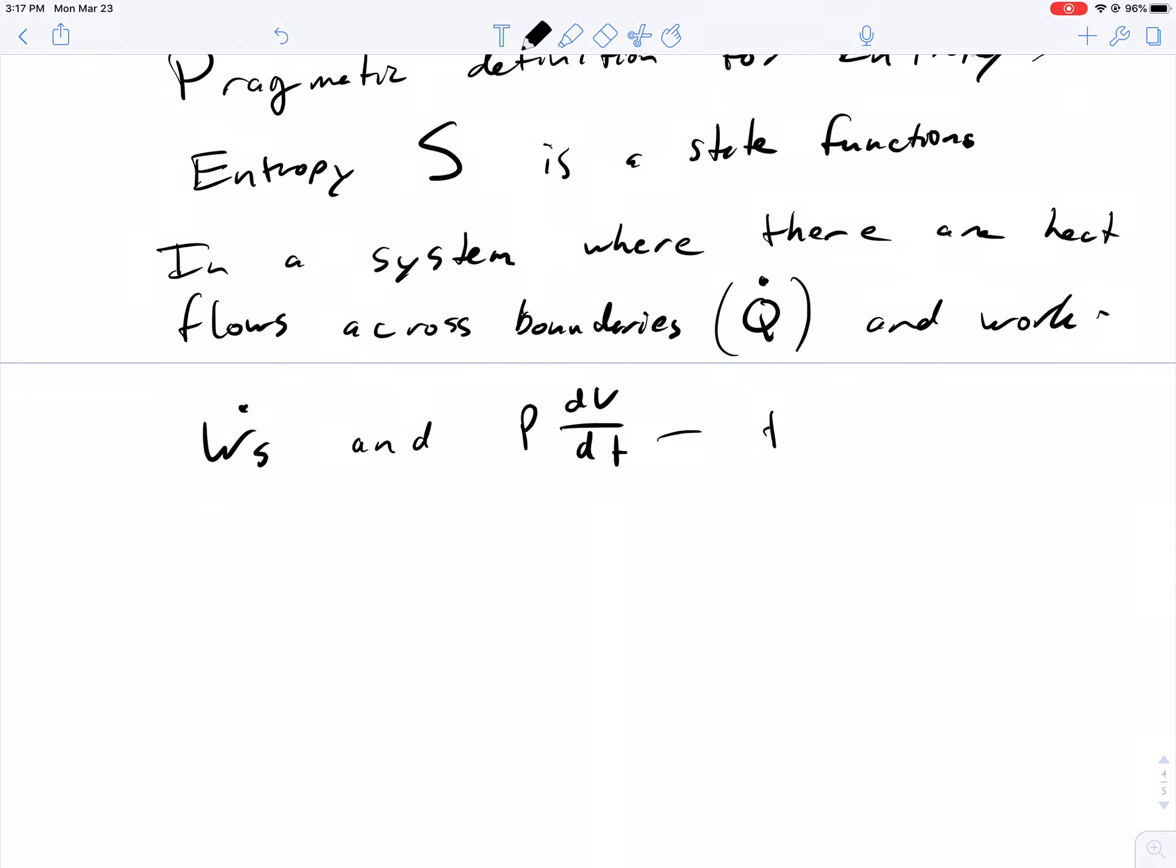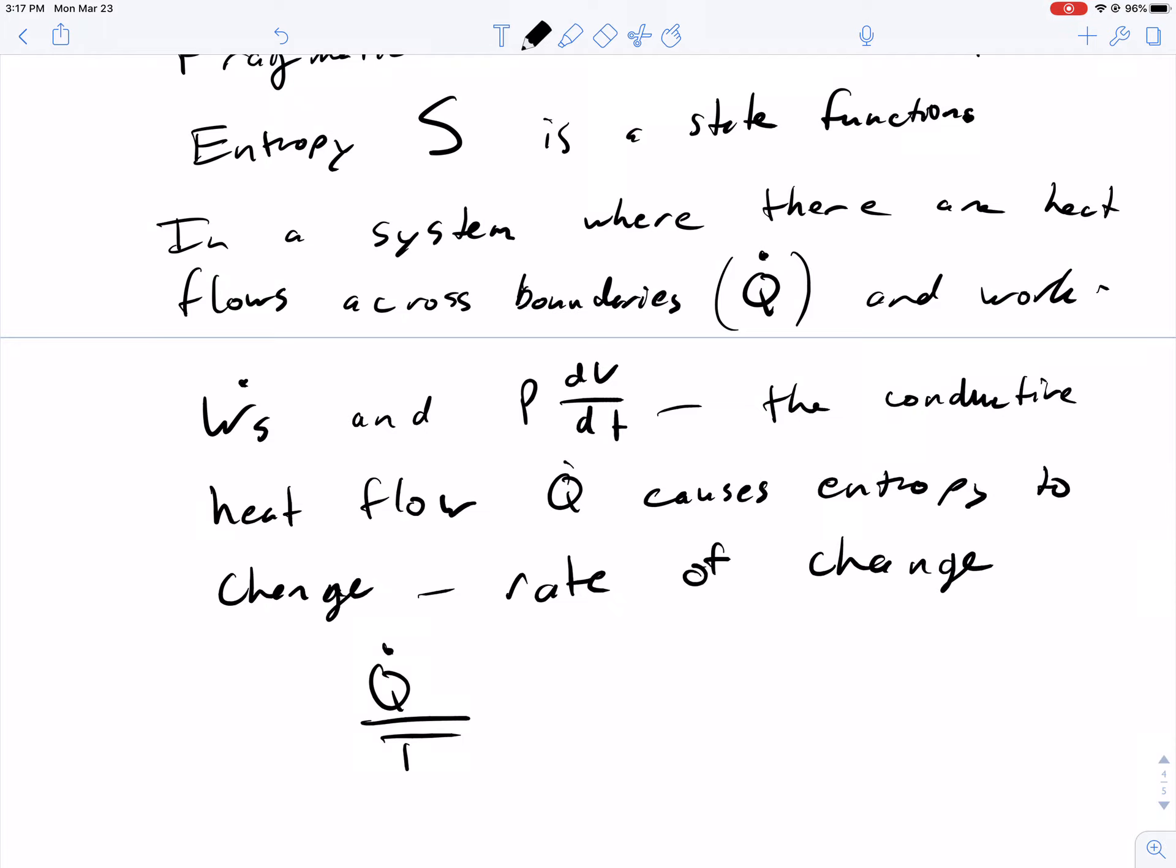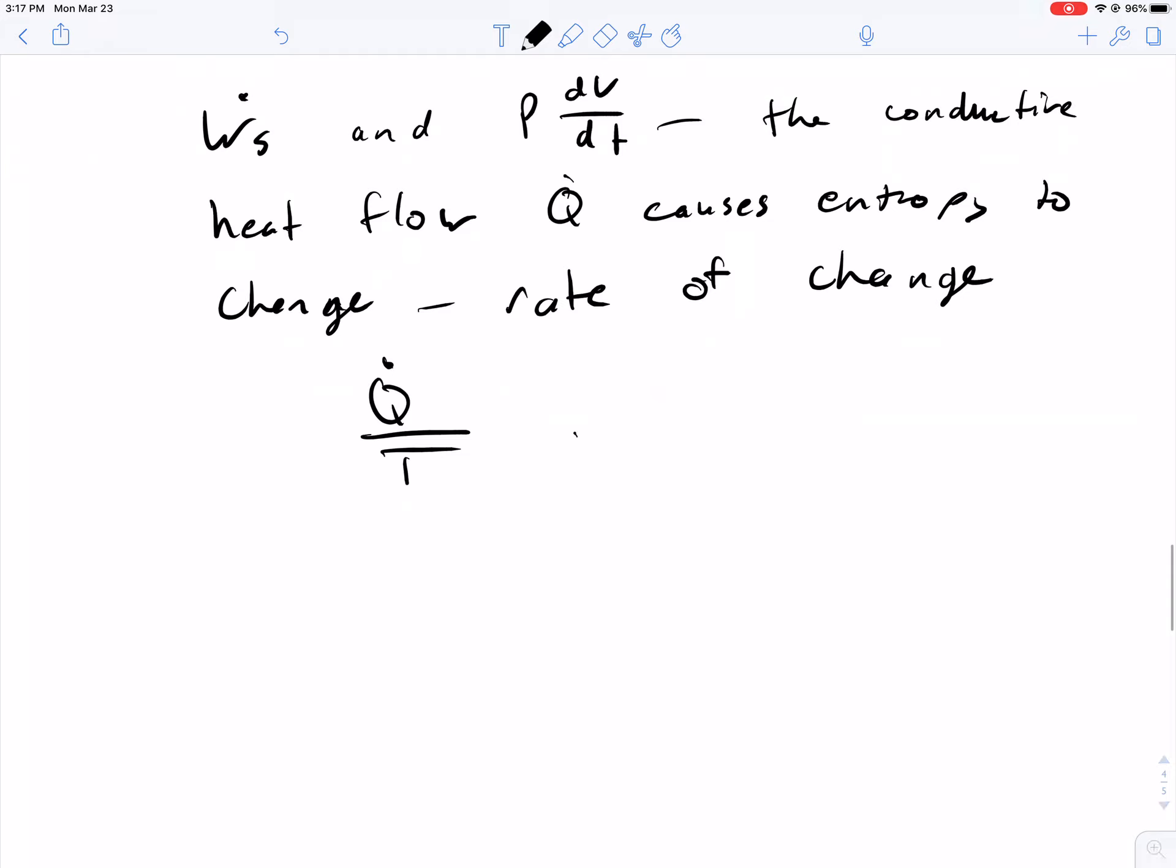Then the conductive heat flow, Q dot, causes the change in entropy of the system. The rate of change is this peculiar new term that we'll be working with: Q dot over temperature, where this temperature is the absolute thermodynamic temperature of the system.